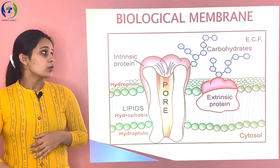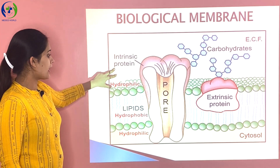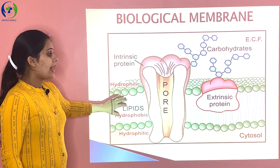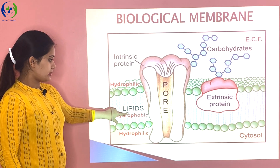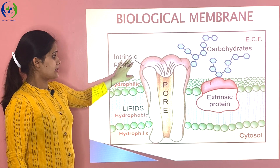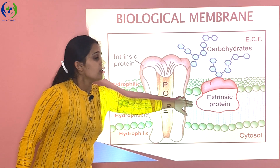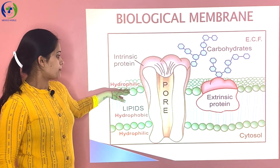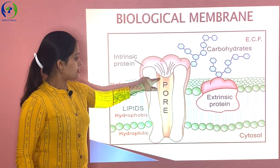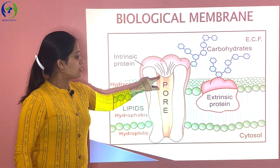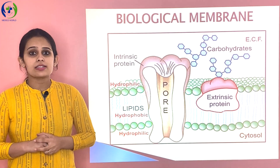What is the cell membrane? It is also called the biological membrane or plasma membrane. Here we can see the diagram of the biological membrane — it is a bilayer of phospholipid and cholesterol. Cholesterol molecules are embedded into this phospholipid layer. There are proteins present: extrinsic protein and intrinsic protein. The extrinsic protein is loosely attached to the outer surface, while the intrinsic protein surrounds this pore — a minute pore present within the cell membrane.